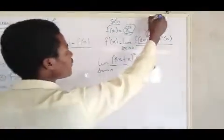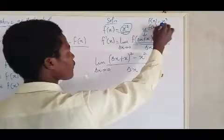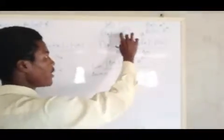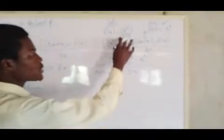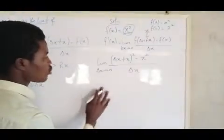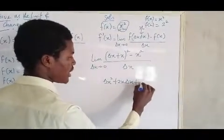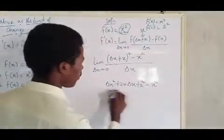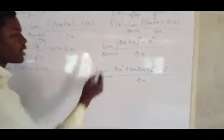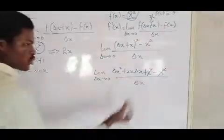So this becomes the limit as delta x approaches zero of delta x plus x, all squared, minus x squared, all over delta x. You know, for example, if f of x equals x squared and they say find f of 2, f of 2 simply means 2 squared. So f of all these things means all these things squared. If you expand the square, you get delta x squared plus 2x delta x plus x squared.